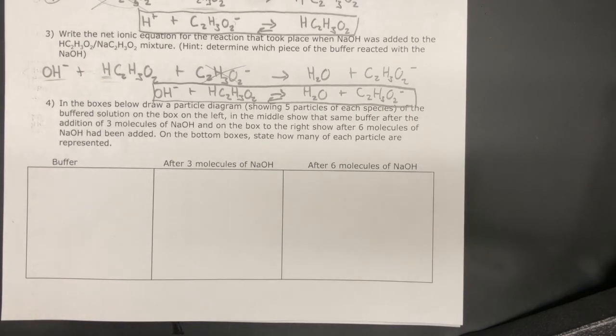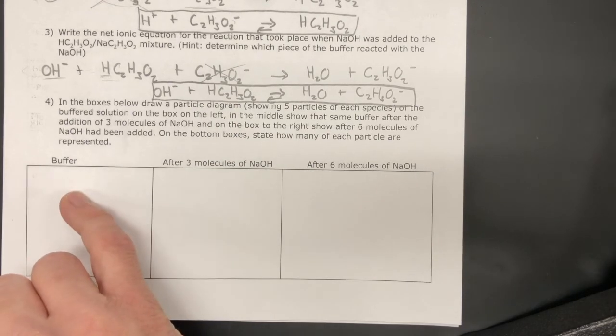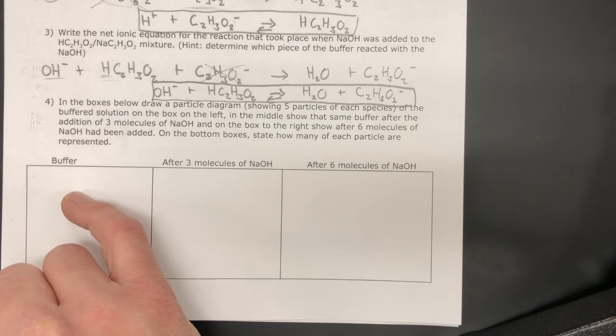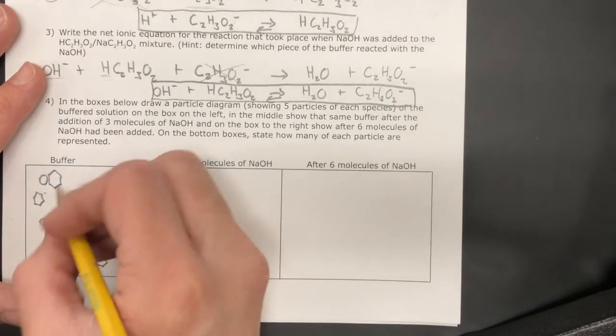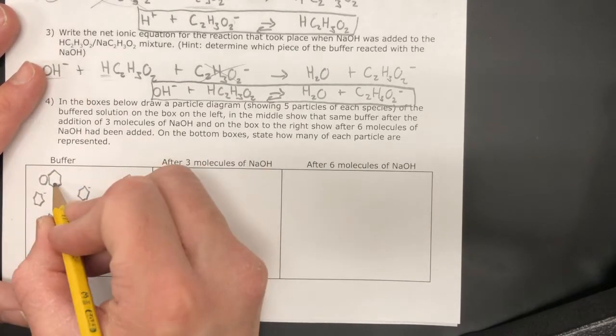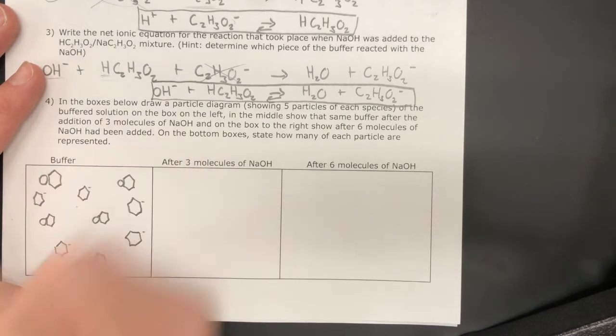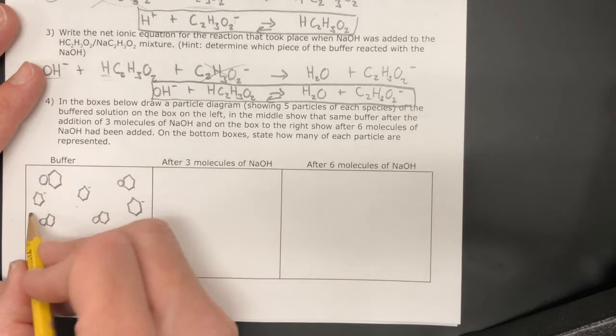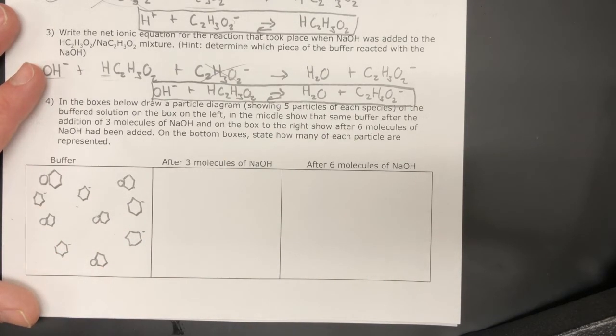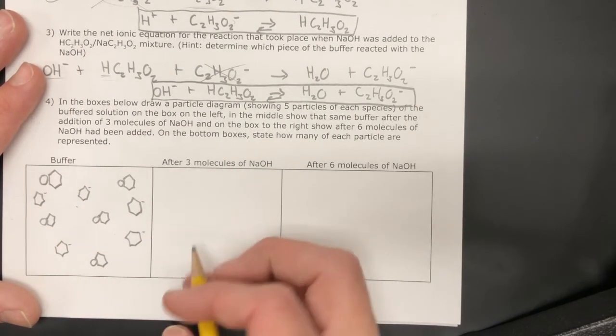So now we want to take a look at some particle diagrams. It's helpful for us to think about what's happening on the particle level. And so pause the video right here and then draw your buffer. I want to see the mixture with five species of the weak acid and five species of that acetate ion conjugate base. So this is my drawing. I used a hexagon to represent that acetate, and then the weak acid has hydrogen attached to it. The free acetate ions are shown there.